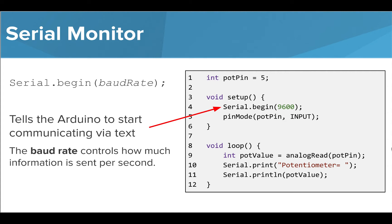It is not very important that you understand this value or what it does, so you may just want to remember that anytime you want to use the serial monitor, you'll use 9600. This command will tell the Arduino to start communicating via text.